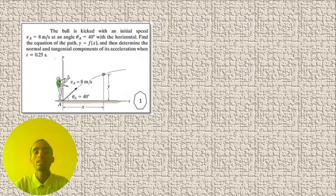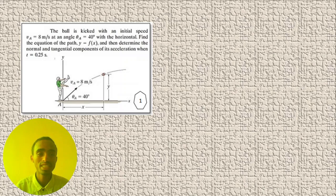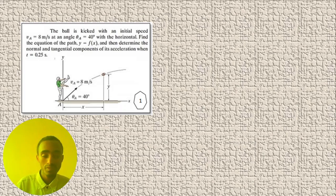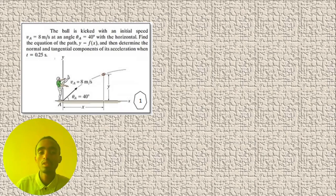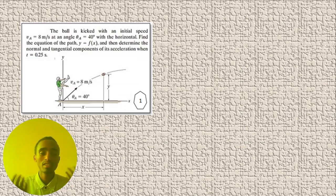To calculate this problem, we must first know about the horizontal and vertical components of acceleration and displacement in projectile motion. The horizontal motion is uniform motion, meaning the velocity is constant and acceleration is zero. For the vertical component, the acceleration is constant — it is a uniformly accelerated motion.